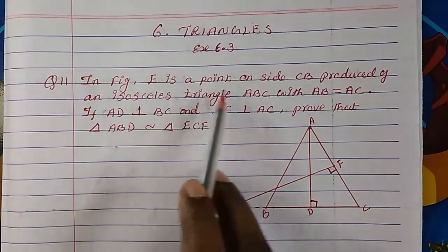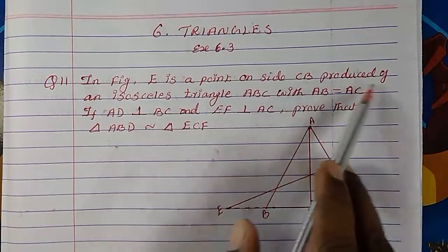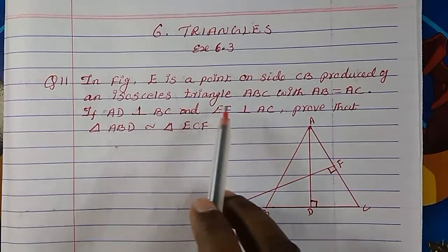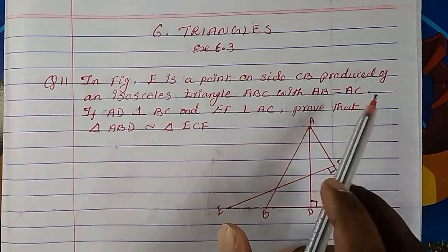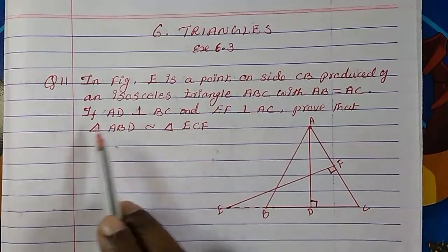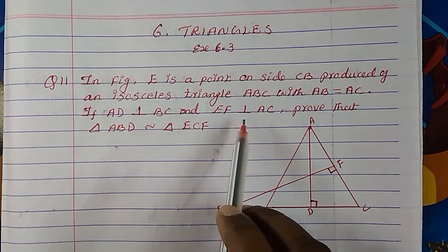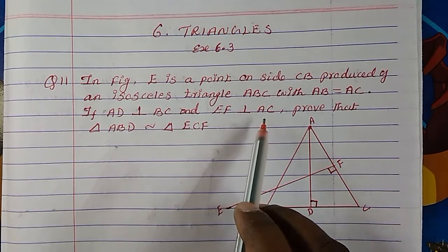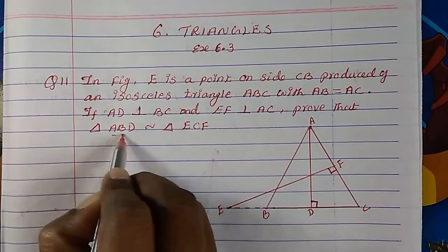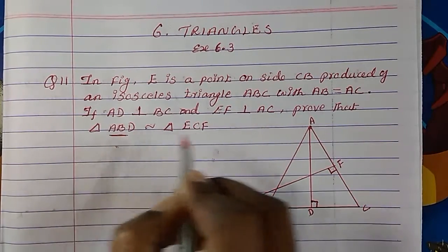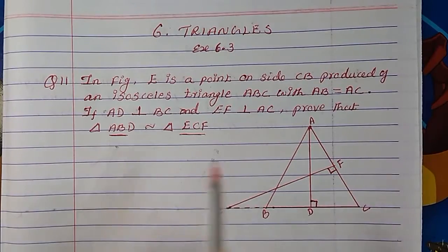In figure, E is a point on side CB produced of an isosceles triangle ABC with AB equal to AC. If AD is perpendicular to BC and EF is perpendicular to AC, prove that triangle ABD is similar to triangle ECF.